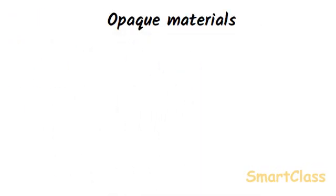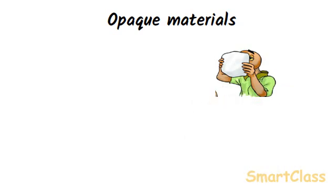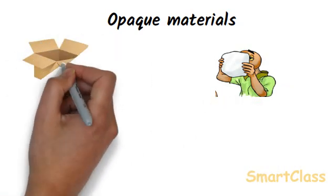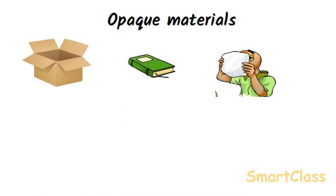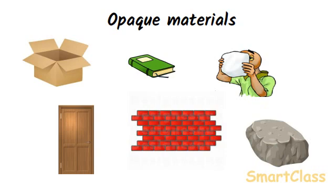Opaque materials are those which do not allow any light to pass through them. The materials like cardboard, book, wooden door, brick wall and stones are all opaque materials. These materials do not allow any light to pass through them, and we cannot see anything through an opaque object. We cannot see anything behind a wooden door because it is an opaque object. If we cannot see through an object at all, it is not allowing any light to pass through it, and hence it is an opaque object. The opaque objects do not allow light to pass through them because they absorb or reflect all the light falling on them.